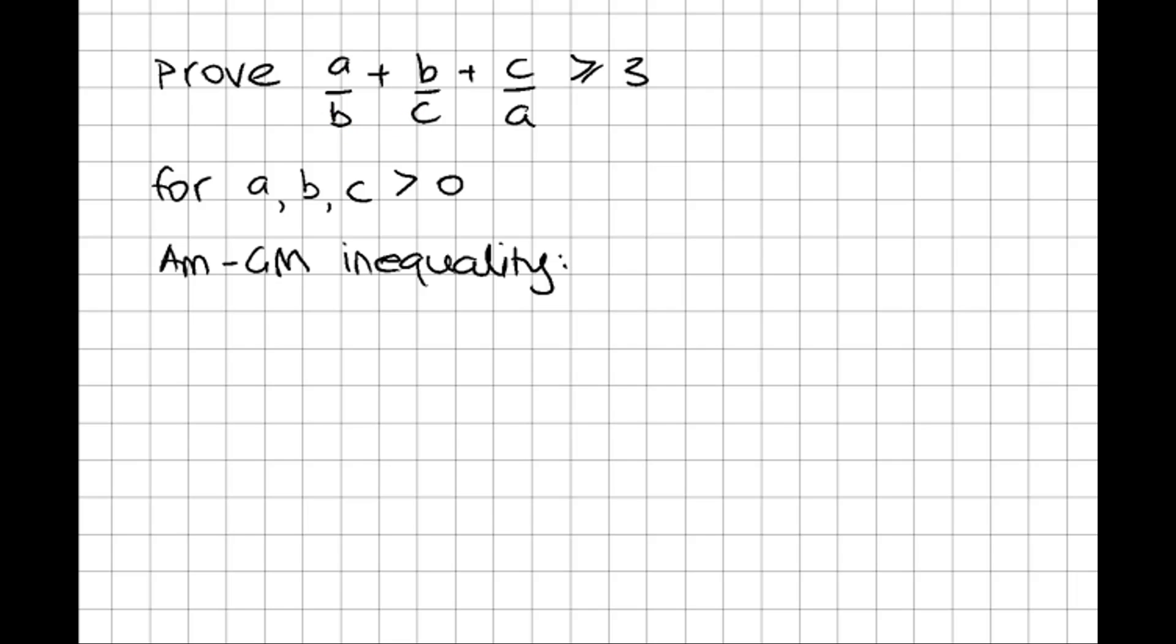a/b, b/c, and c/a. So if we think about the arithmetic mean of those terms, that would be the sum of those terms: a/b + b/c + c/a, divided by the number of terms. The way I'll write that is just multiplying by 1/3.